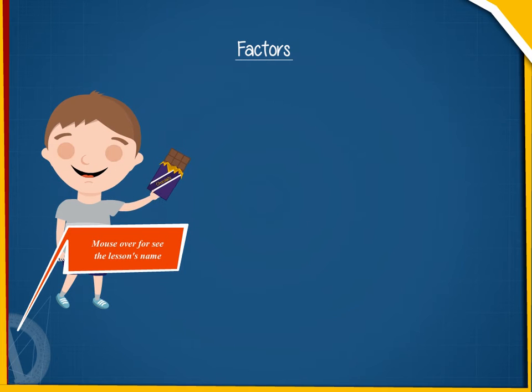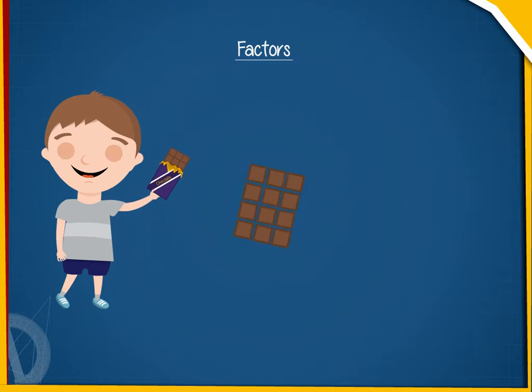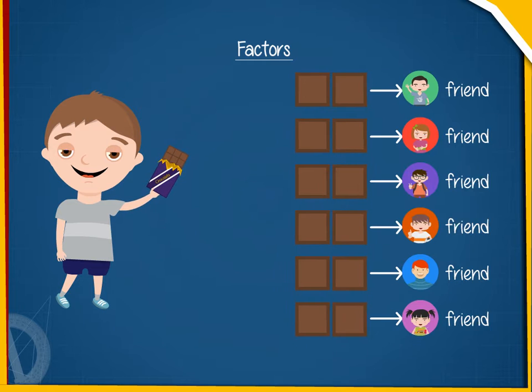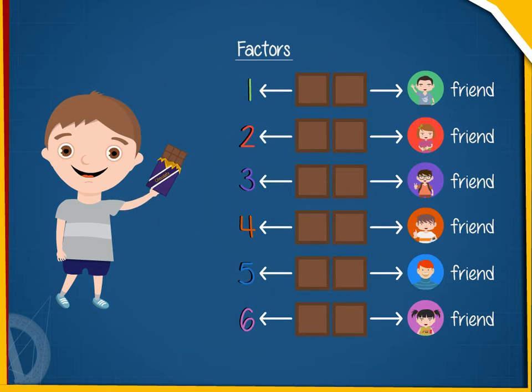Factors. Rohan has a chocolate bar with 12 pieces. He gives 2 pieces each to 6 of his friends and hence the chocolate is divided equally without any remaining piece.